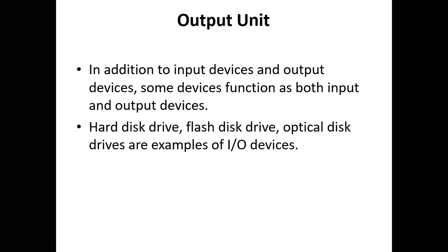Some devices function both as input devices and output devices. On smartphones, for example, the touchscreen is used for getting output and also for giving input — it functions as both. Devices such as hard drives, flash disks, and memory cards also function as input-output devices: you can send output to a flash drive, and you can also retrieve data from it, so it acts as both.